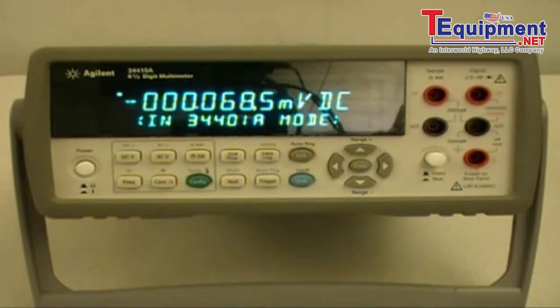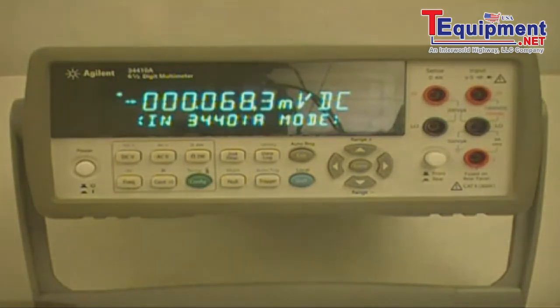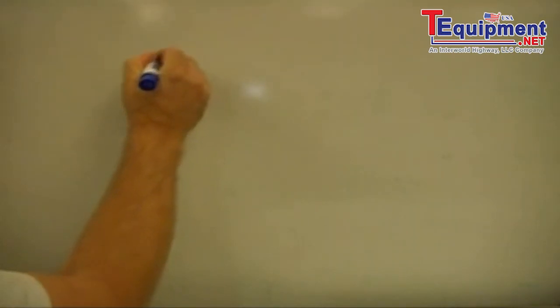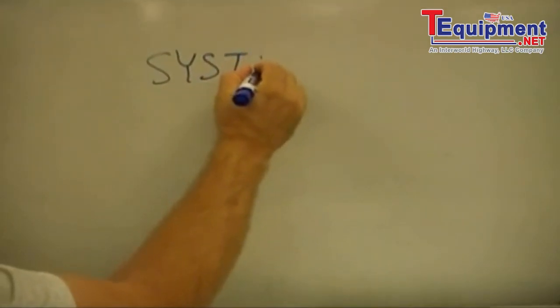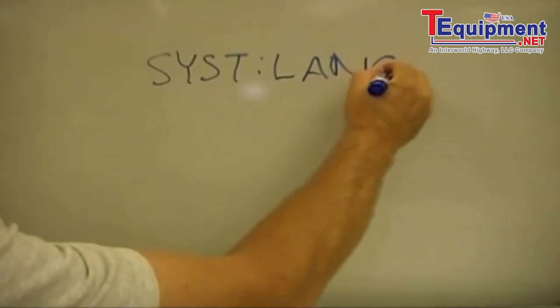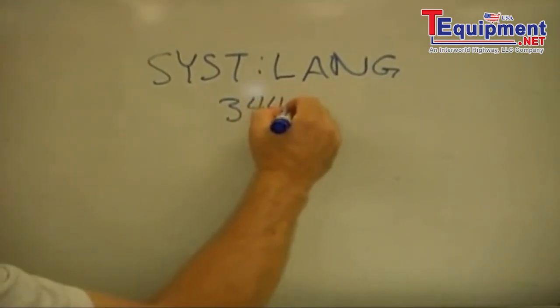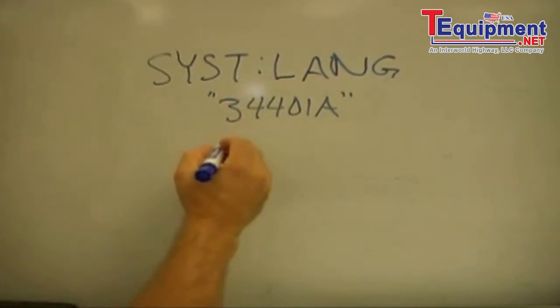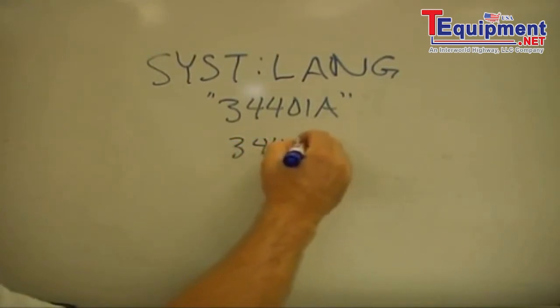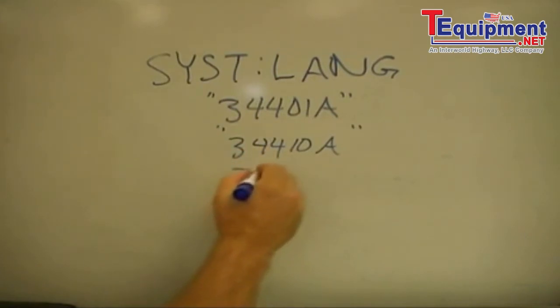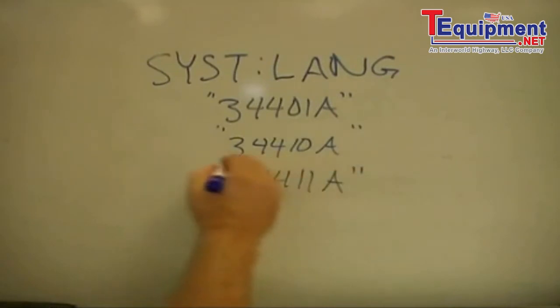Now let's go to the whiteboard and I'll show you a few of the I/O commands you can send to change the programming modes. If you want to change the 34410A or 34411A programming mode remotely, you can use the SYSTem:LANGuage command. The options you have are 34401A or 34410A, depending upon which programming language you want to use.